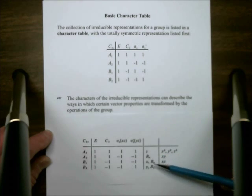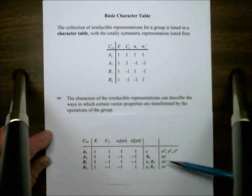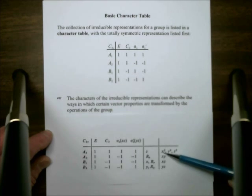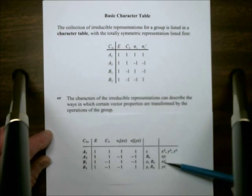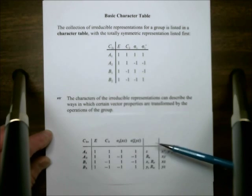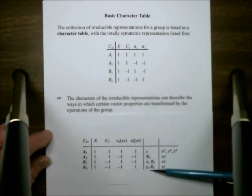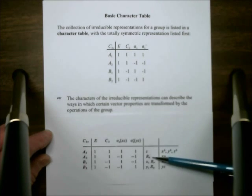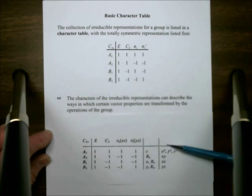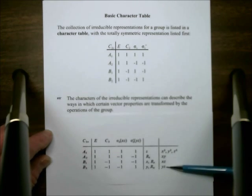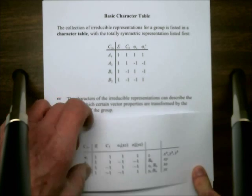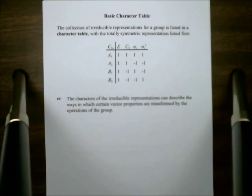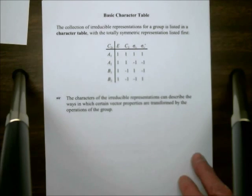If you look in the back of the book, you'll find that the character table for C2v looks a little bit more complex. There's a column here where we have some notations z, x, and y, and rz, ry, and rx. And in the final column, we have some binary products x squared, y squared, z squared, xy, xz, and yz. What we want to do right now is look at how these are generated. Eventually, we'll look at how we can apply that to a more general case.